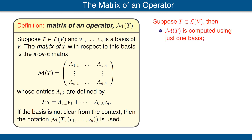Suppose T is an operator on V. We want to emphasize once again that the matrix of T is computed by using just one basis of V. Also, the matrix of T is a square matrix, meaning that it has the same number of rows and columns.